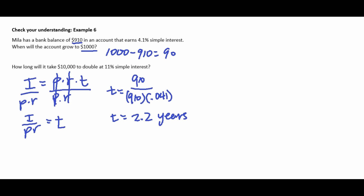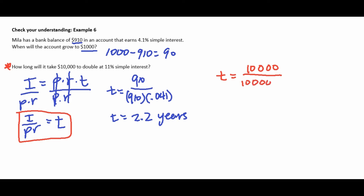Checking for understanding: How long will it take $10,000 to double at 11% simple interest? Doubling means earning $10,000 in interest (going from $10,000 to $20,000). Using T = I ÷ (P × R): T = 10,000 ÷ (10,000 × 0.11) ≈ 9.09 years. It takes just over nine years for $10,000 to double at 11% simple interest.